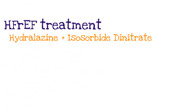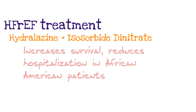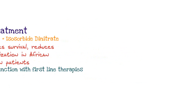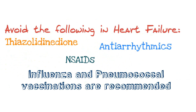One of the last pharmacological treatments is hydralazine with isosorbide dinitrate. This combination is used specifically in African-American patients, in whom it has been shown to increase survival and reduce hospitalizations. Monitor for hypotension and use these in line with first-line therapies. There are also a few things you should avoid in patients with heart failure: thiazolidinediones (used for diabetes), antiarrhythmics because they don't improve morbidity and mortality, and any type of NSAIDs. Make sure heart failure patients get their influenza and pneumococcal vaccinations, which are definitely recommended.